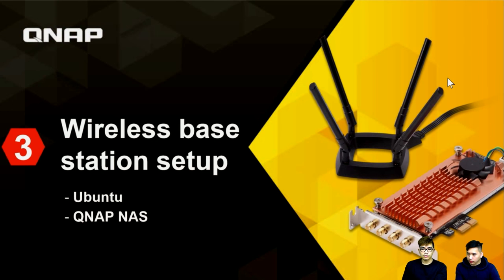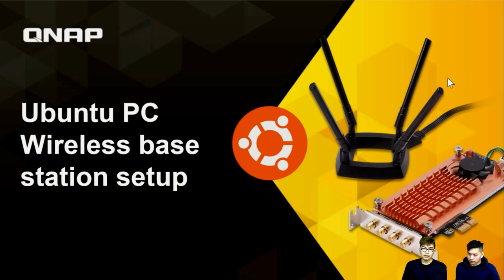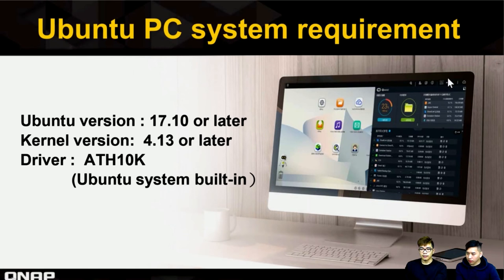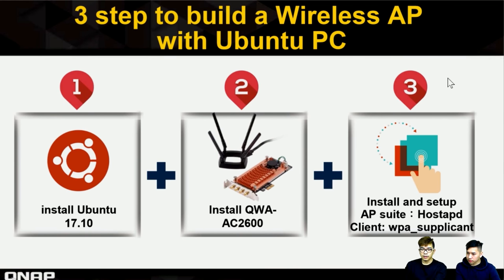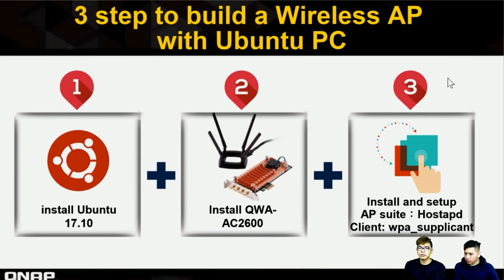Now we'll show how to use Wireless AP Station to set up on Ubuntu or QNAP NAS. First, how to install the wireless card on your Ubuntu PC. The Ubuntu requirements are: Ubuntu 17.10 or later, kernel version 4.13 or later, and the ath10k driver. If your Ubuntu PC meets these requirements, you can use the wireless card. The three-step process is: install Ubuntu, install the wireless card, then install and configure the AP suite.